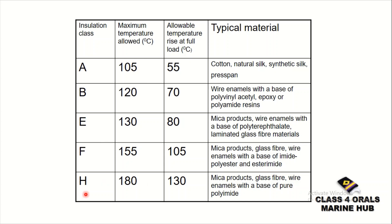Last is Class H insulation. It has a maximum allowed temperature of 180 degrees centigrade. With full load, the allowable temperature rise is 130 degrees centigrade. The typical materials are mica products, glass fiber, and wire enamels with a base of pure polyimide.